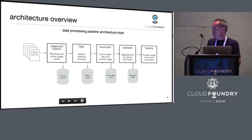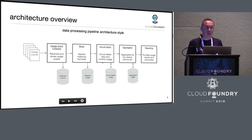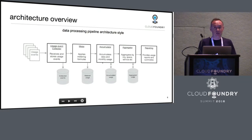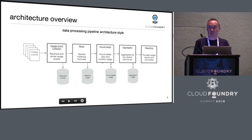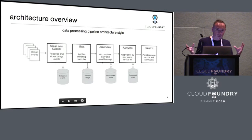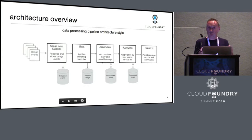A quick overview of the architecture: it's a data processing pipeline made of microservices connected using HTTP-based REST APIs. Service providers or runtime providers post usage events to us. The first step is the usage event collector, which validates whether it's coming from a known service provider, identifies the resource type, and collects the metering, rating, and pricing plan configuration for that usage.